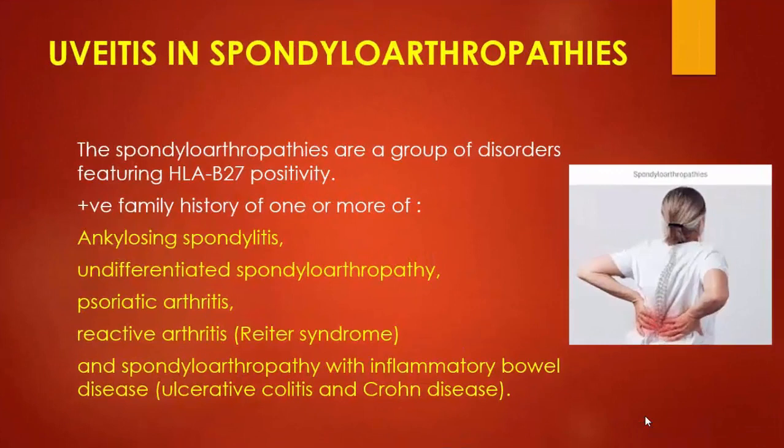Uveitis in spondyloarthropathies. Spondyloarthropathies are a group of disorders featuring HLA-B27 positivity. Family history is present of one or more of the following: ankylosing spondylitis, undifferentiated spondyloarthropathy, psoriatic arthritis, reactive arthritis, and spondyloarthropathy with inflammatory bowel disease like ulcerative colitis and Crohn's disease.